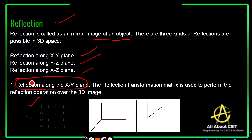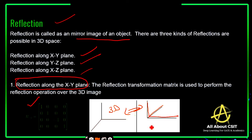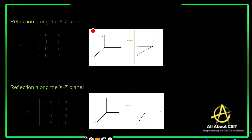For reflection along the XY plane, this is the matrix, and the mirror image is shown on the 3D plane. For reflection along the YZ plane, this is the matrix used. Whatever the YZ components are, they are reflected as a mirror image — x remains the same, and the YZ reflects to produce the mirror image.